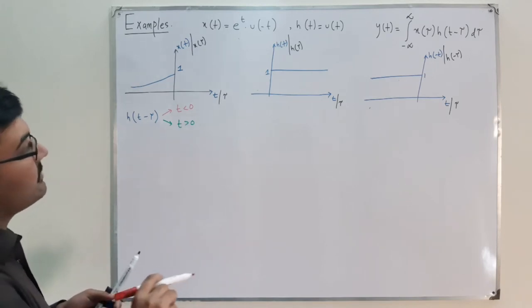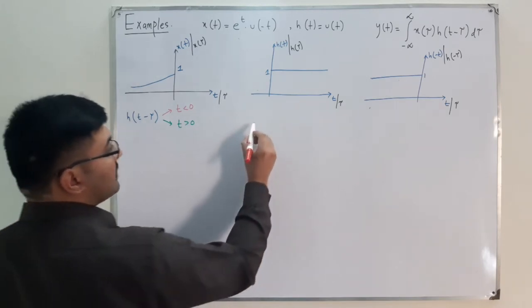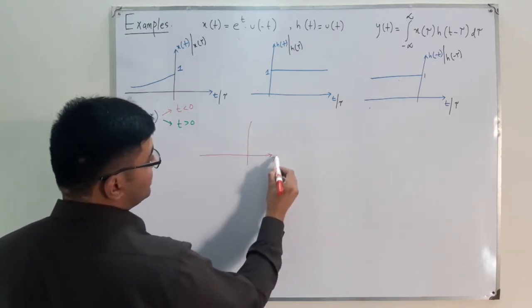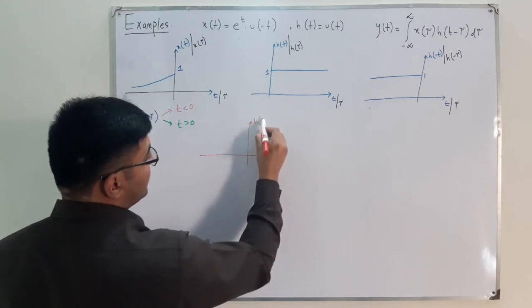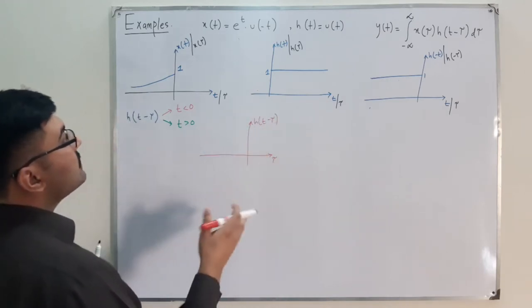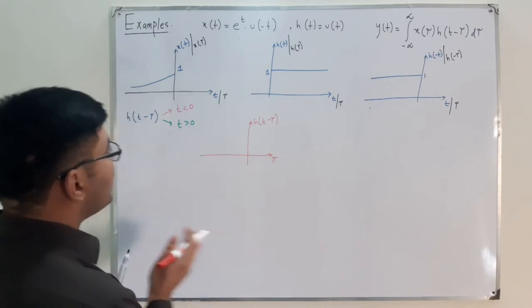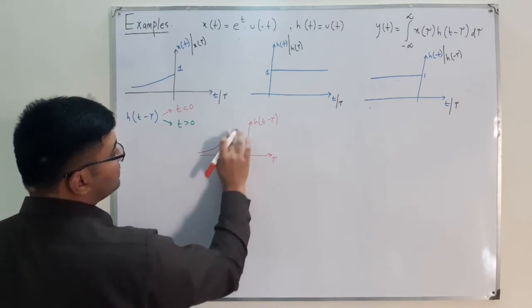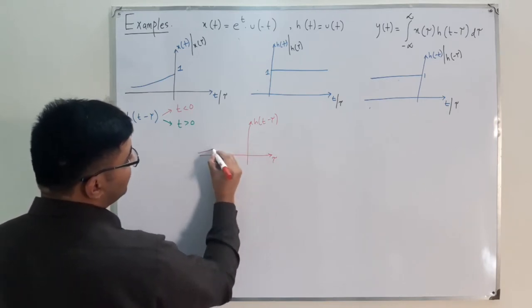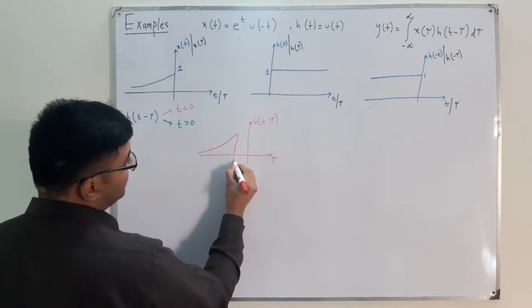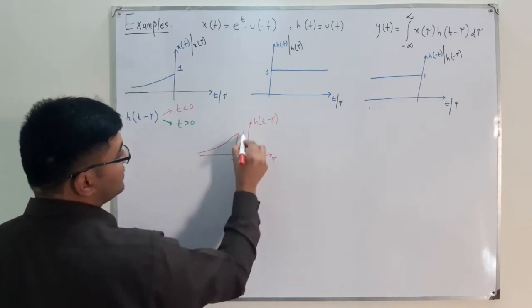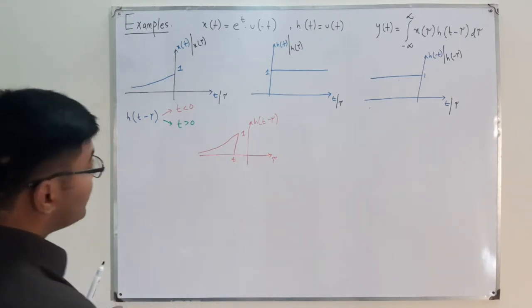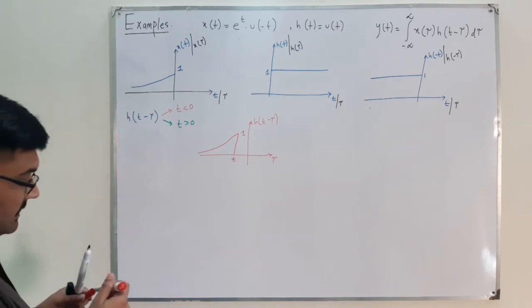First, let's consider the case t < 0. We draw h(t - τ) on the τ axis. The signal comes from negative infinity and ends at τ = t. The magnitude is 1. So this is h(t - τ) for t < 0.